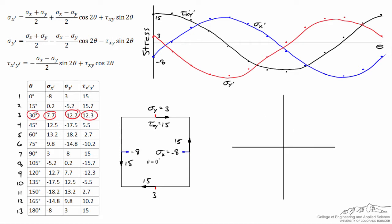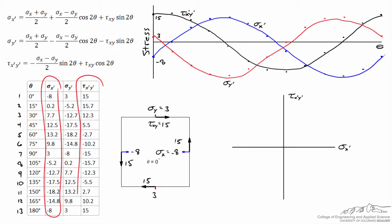Another way to represent these equations is by using Mohr's circle, which conveys the exact same information but the graph just looks different. Some people find this interpretation of the stress transformation equations to be more intuitive. To make Mohr's circle, we plot sigma x prime on the x-axis and tau x prime y prime on the vertical axis — plotting the sigma x prime column on the horizontal axis and the tau column on the vertical axis.